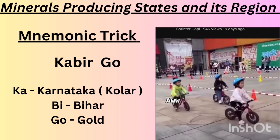The next one is about gold. The trick is: 'Kabir go.' Take the word 'Kabir' — Ka stands for Karnataka, Kolar. Bi stands for Bharat. 'Go' represents gold. So Kolar in Karnataka is the major gold producing region.